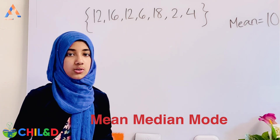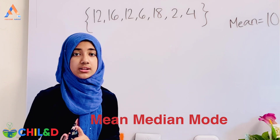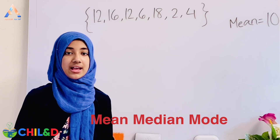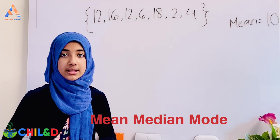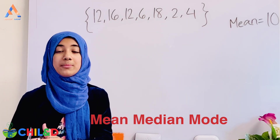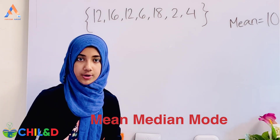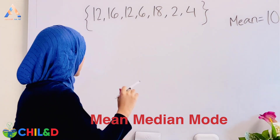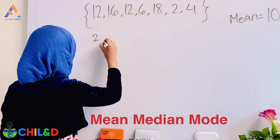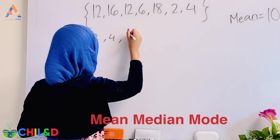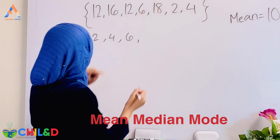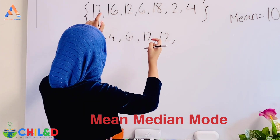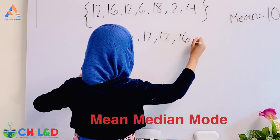We have to arrange the numbers in ascending order first before finding the median. So arranging: 2, 4, 6, 12, 12, 16, and 18.